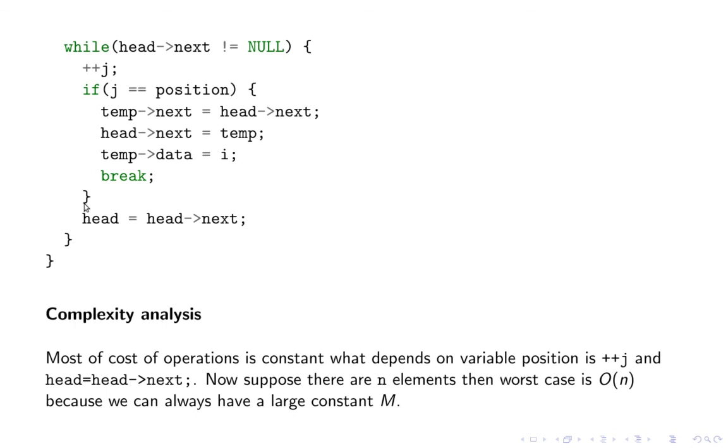What varies is this ++j and this composition. Suppose there are n elements in the linked list, and suppose we have to iterate all of them to do the insertion. Then our worst case is order n, because that will be typically c1 + c2 + c3*n. The constant n can be greater than c1 + c2 + c3 so as to cover everything and give us our upper bound.